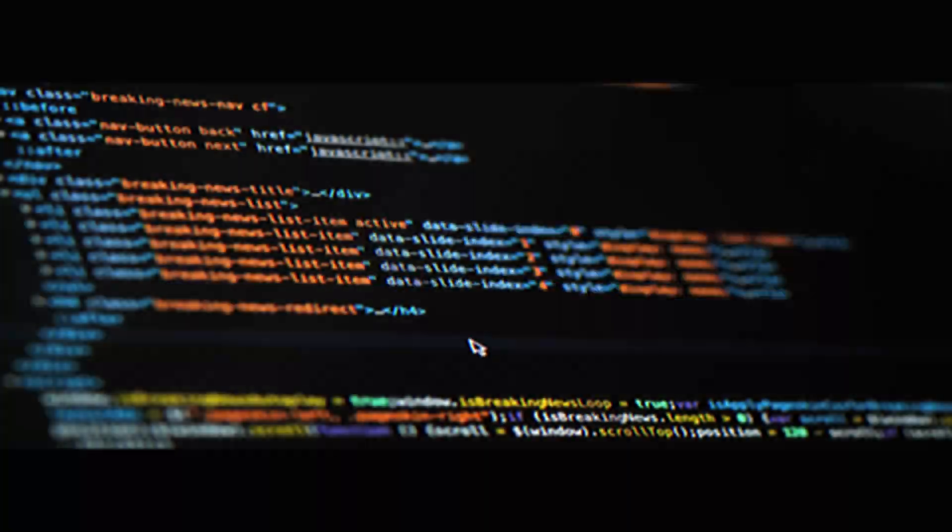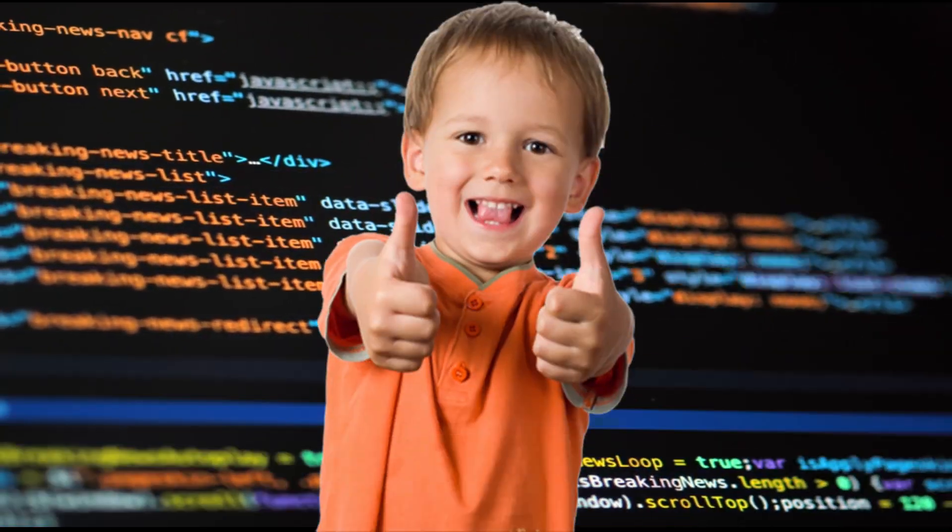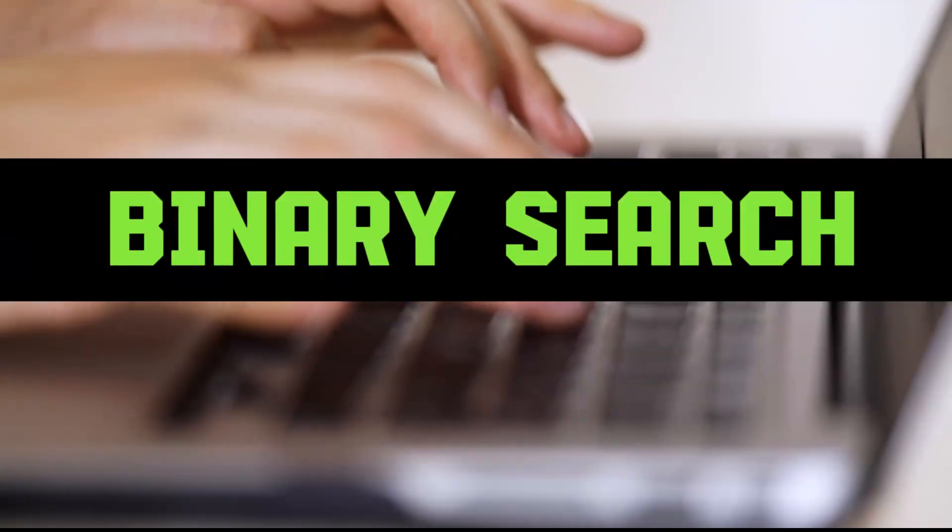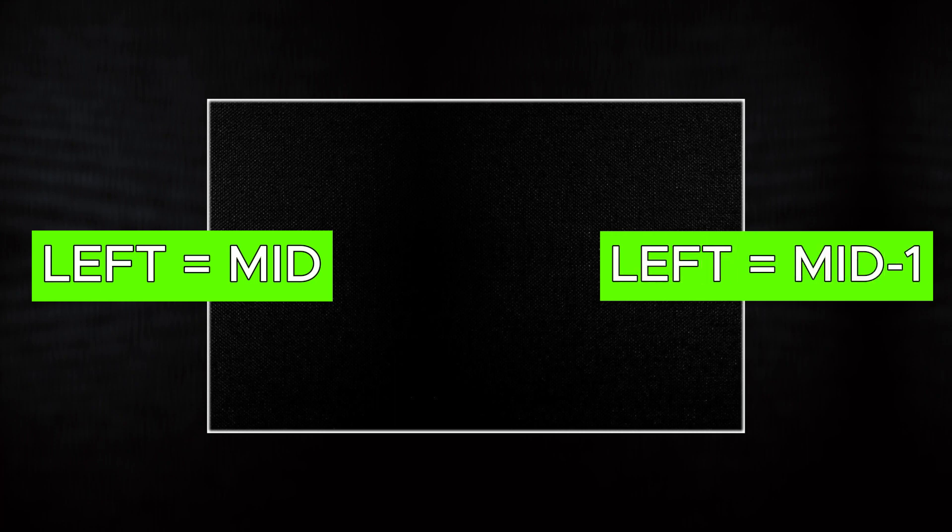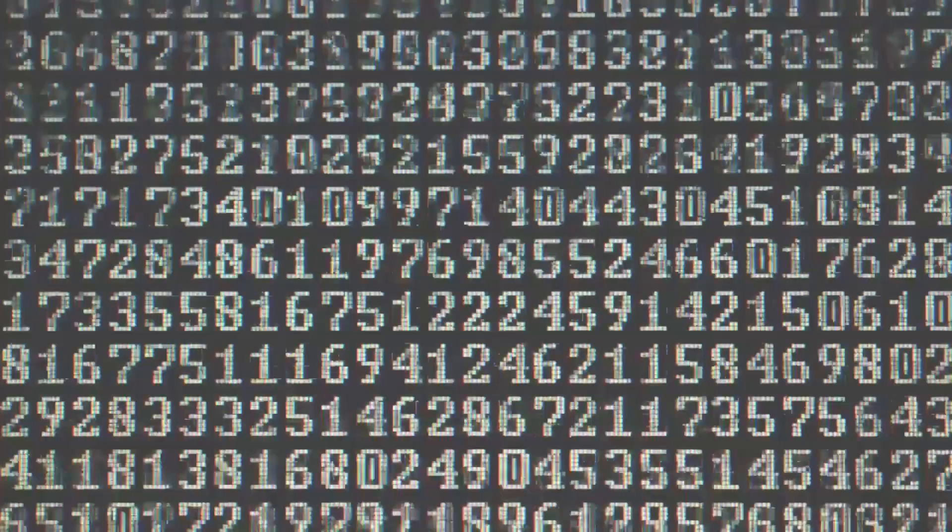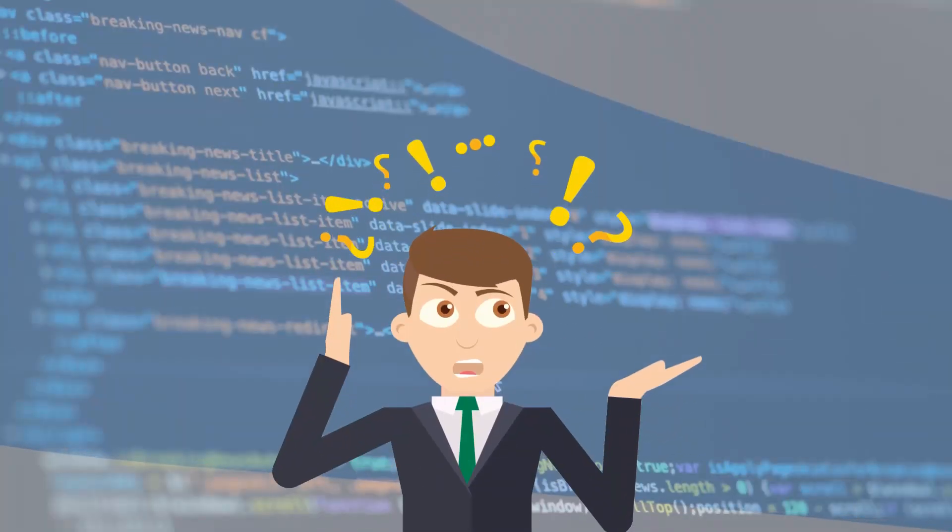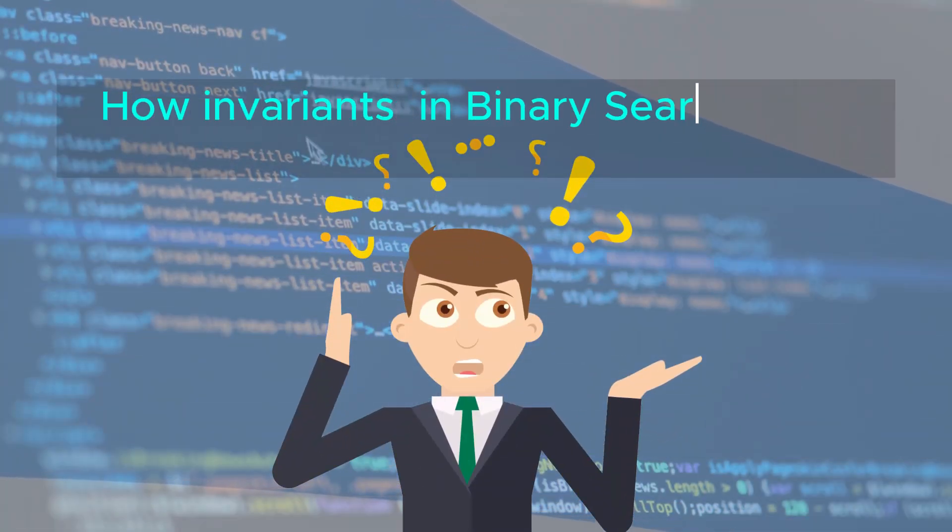Today we will be learning about a super interesting technique which will end your daily struggles in writing different kinds of binary searches. Should I write while r is greater than l or maybe while r is greater than equal to l? Should I write left is equal to mid or maybe left is equal to mid minus 1? Well, you will never have to worry about these minute details ever again after understanding how invariants in binary search work.